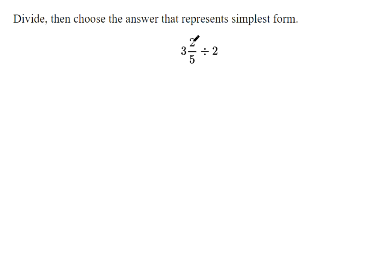So to divide these two things, let's first convert this number to an improper fraction. We'll do 5 times 3 makes 15, 15 plus 2 makes 17.